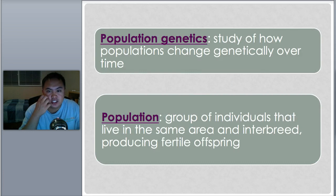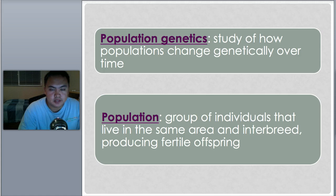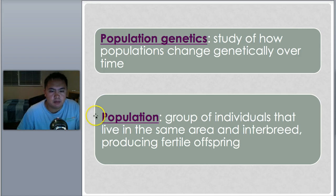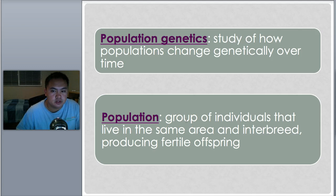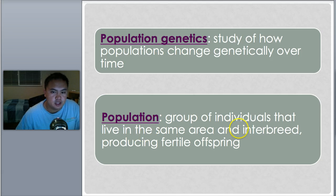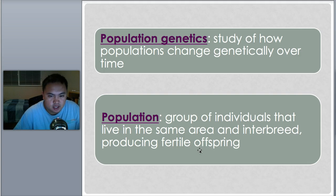Population genetics means the study of genetics of a population over a certain amount of time. A population, if you remember from the previous lesson, is a group of individuals of the same species that live in the same area and interbreed to produce fertile offspring — everybody in the same location, all the same species.